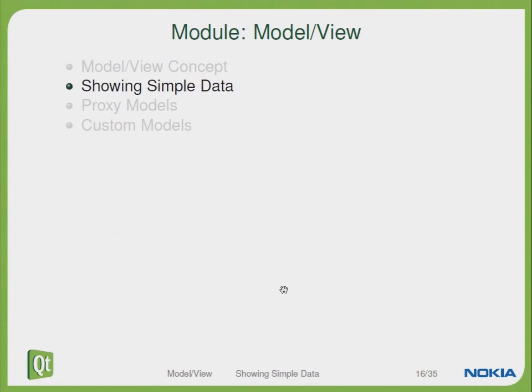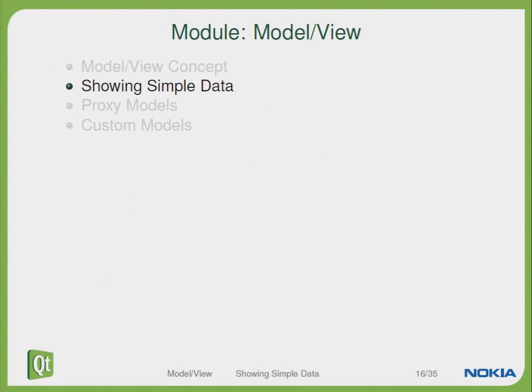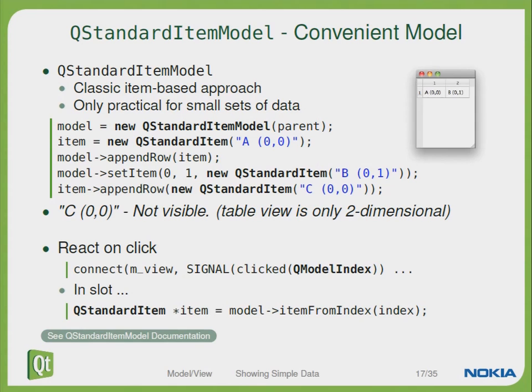So let's take a look at how to show some simple data using model view. Let's take a look at the QStandardItemModel, which is a convenient model. The QStandardItemModel combines the model and the data which we have seen on the previous slide. This is the classic item-based approach and only practical for a small set of data.